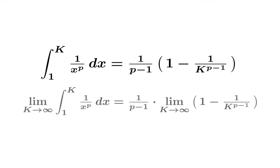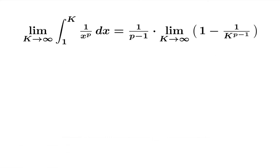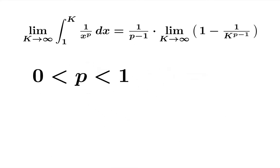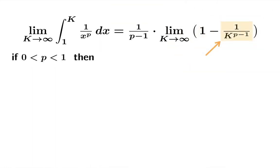Now we need to evaluate the limit. Let's concentrate on the case where p is between 0 and 1 first. We're going to isolate a key term and do some prep work on the limit as k goes to infinity. If p is between 0 and 1, then 1 minus p is a positive quantity.